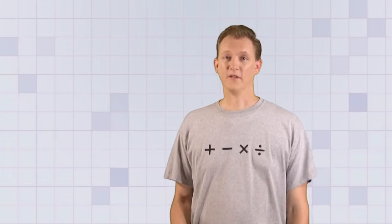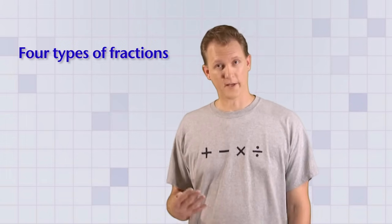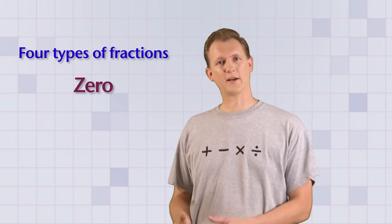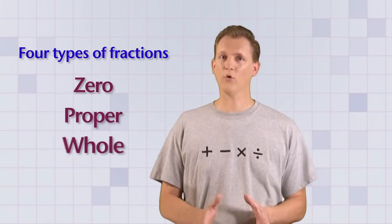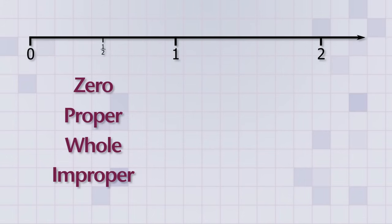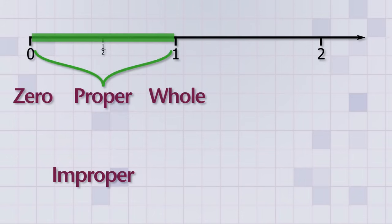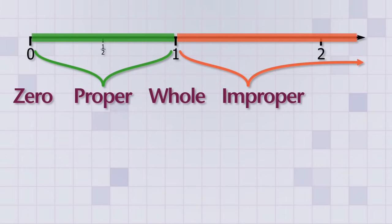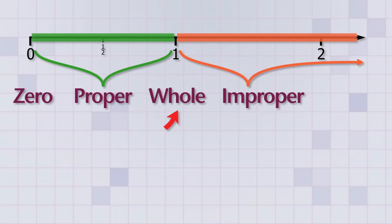These rules show that we have 4 main types of fractions: zero fractions, proper fractions, whole fractions, and improper fractions. Knowing that these main types are in order from smallest to largest on the number line allows you to do some very simple comparisons. A zero fraction is always less than a proper fraction, a proper fraction is always less than a whole fraction, and a whole fraction is always less than an improper fraction.